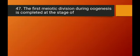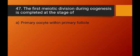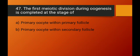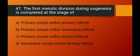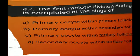Question number forty-seven: the first meiotic division during oogenesis is completed at what stage? The options are primary oocyte within primary follicle, within secondary follicle, or within tertiary follicle. The first meiotic division during oogenesis is completed at the stage of the primary oocyte within the tertiary follicle. Option C is the right answer.